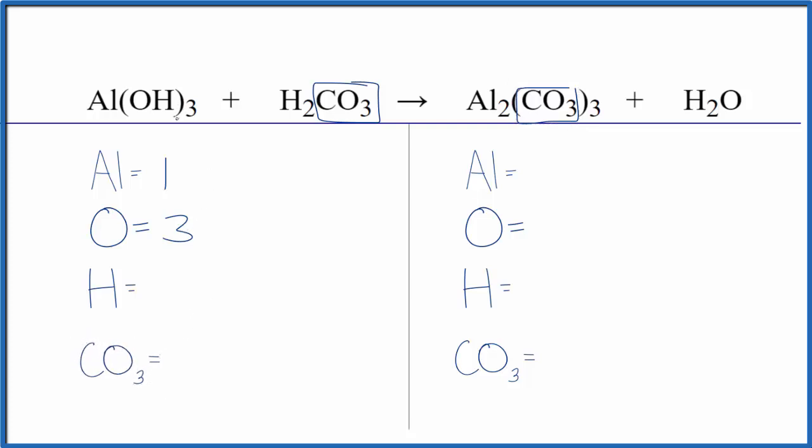For the hydrogens, we have three times the one, plus we have the two here. So we have five hydrogen atoms. And then we just have the one carbonate ion.